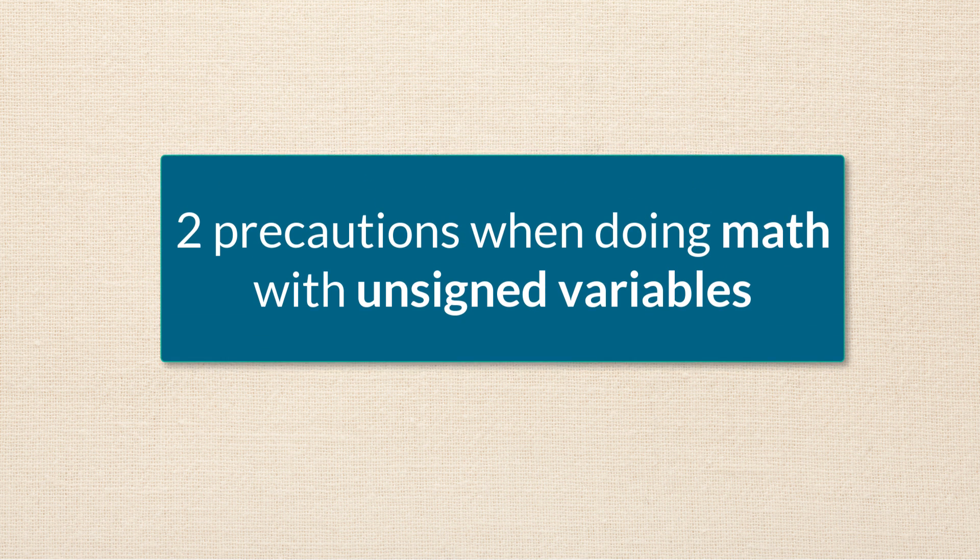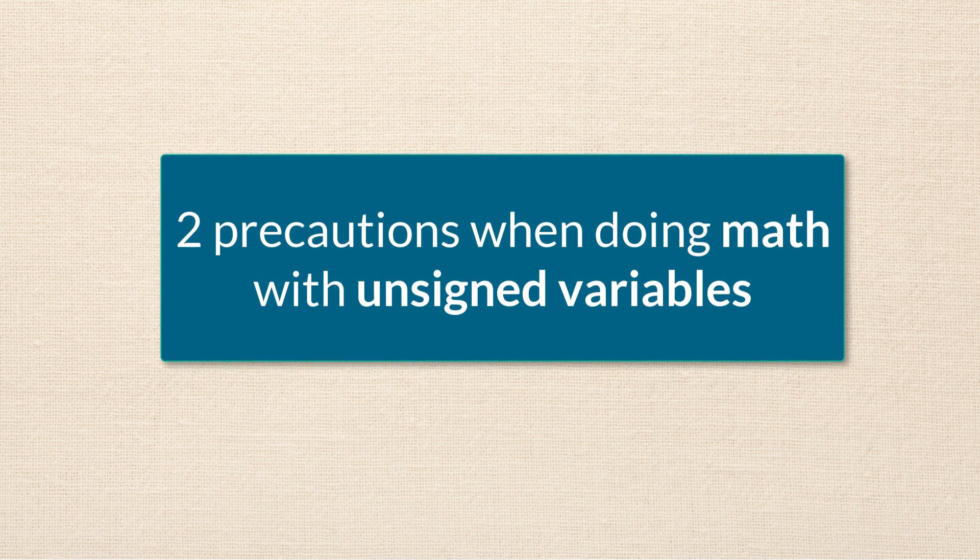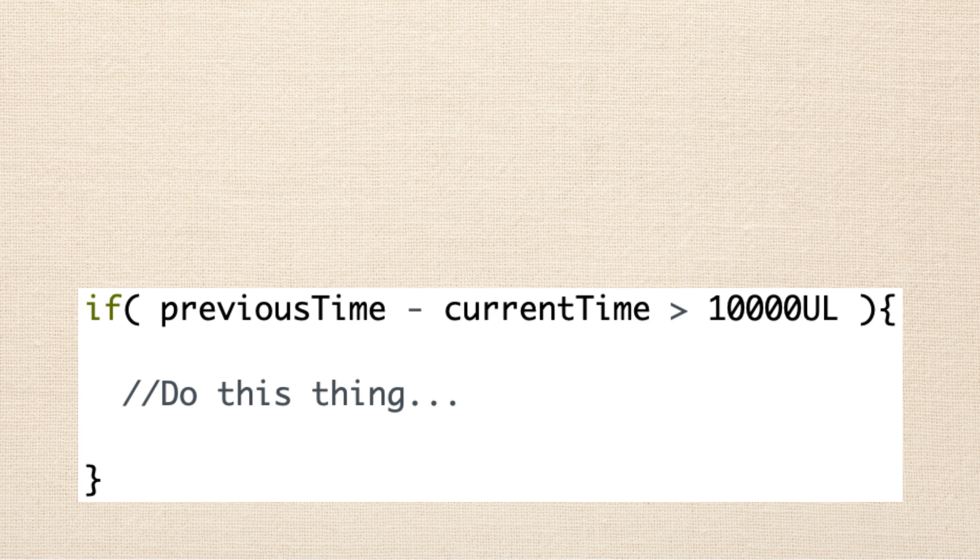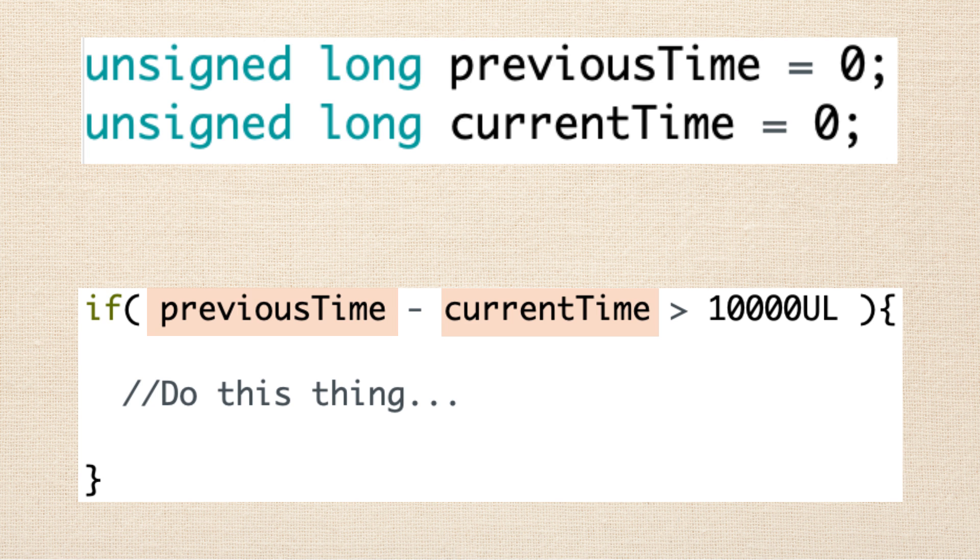Now, a quick note about these unsigned longs that can really screw some stuff up when you're using millis, and I know personally from experience. If you're going to be doing any math with a variable that is an unsigned variable, then make sure that these two things are true and you should be good. First, any other variables that are going to be used to change that variable should also be an unsigned long. So let's say you've got a variable called previous time and you're going to subtract a value from it, and that value is in another variable, say it's like current time. Well, make sure that that other variable is also an unsigned long.